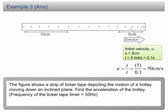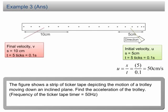At the end of the ticker tape, the trolley took 5 ticks to move 10 cm. Therefore, the displacement is 10 cm and the time taken is 5 ticks or 0.1 seconds. From the calculation, the final velocity v = 100 cm/s.